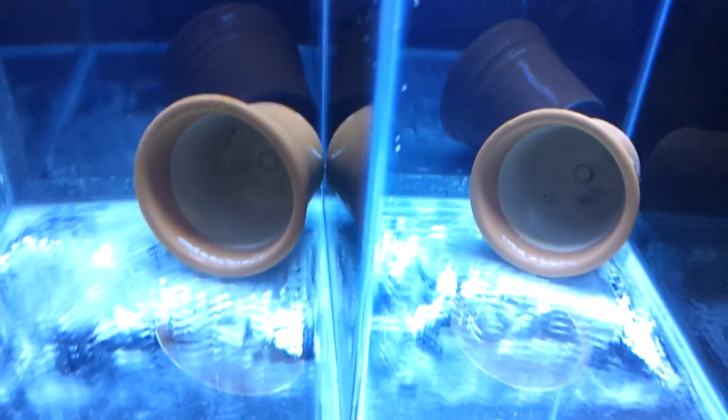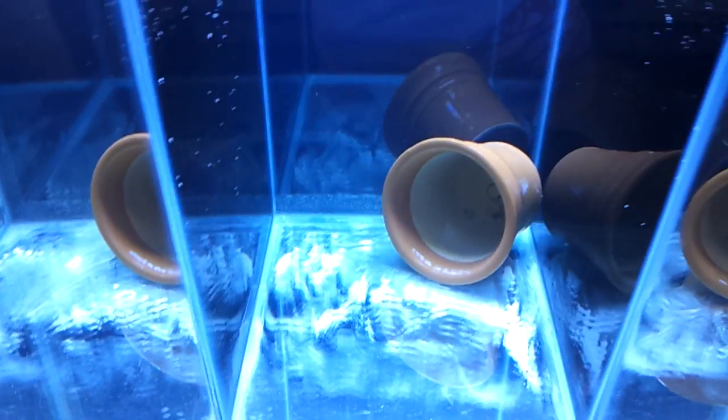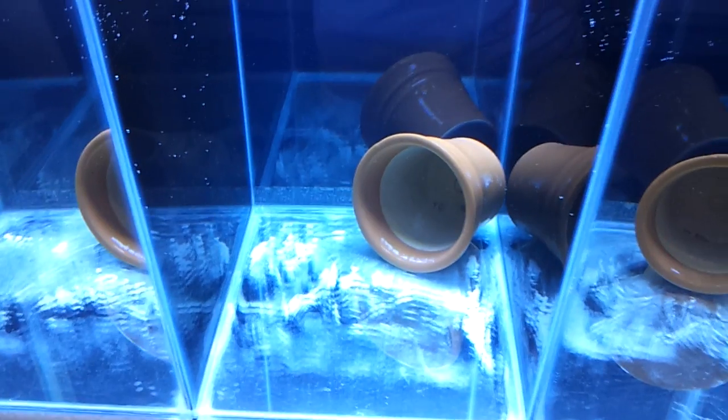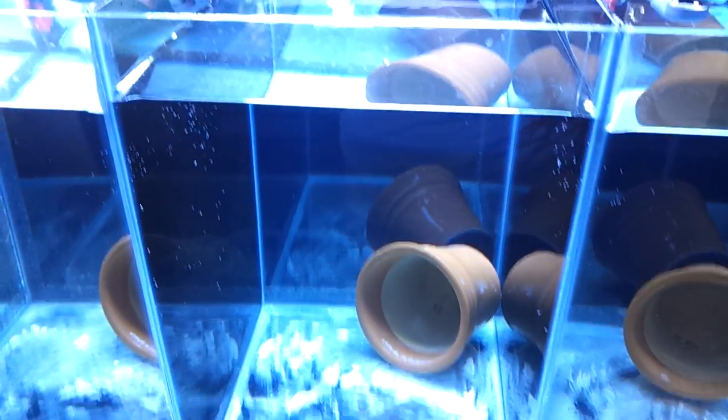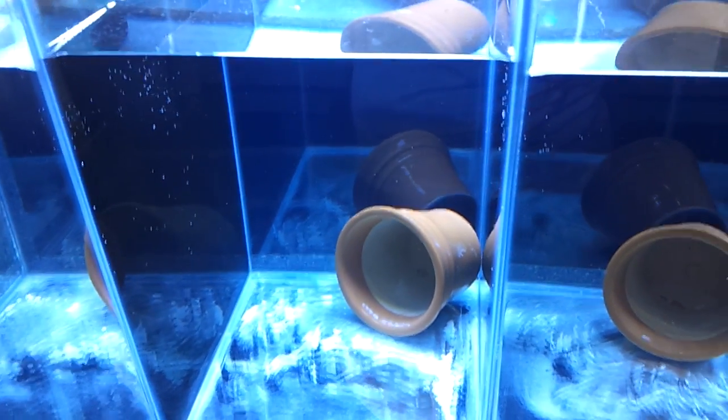So that's it. I have the flower pots in there. I'll wait for it to finish cycling and I'll add in some nemos. Most probably I won't be adding in the normal clownfish. I'll try to select some special ones. Thanks guys.